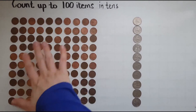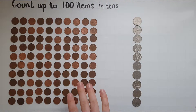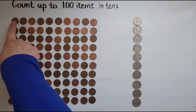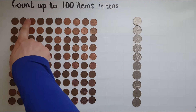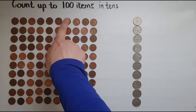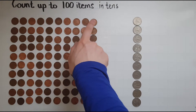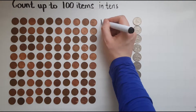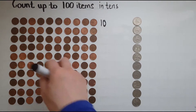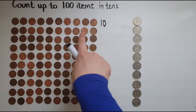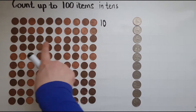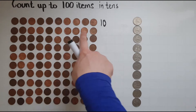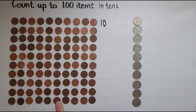I have a number of 1p coins here and in the first row I've got 1, 2, 3, 4, 5, 6, 7, 8, 9, 10. So I have 10p in the first row. It's the same number in the second row and all the other rows. So I've got 10p in each of them.